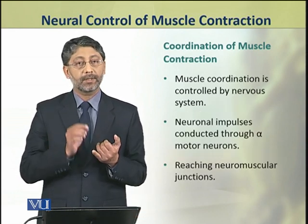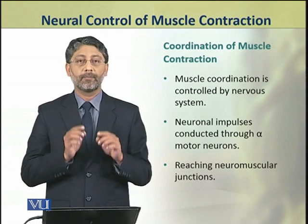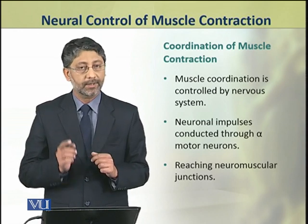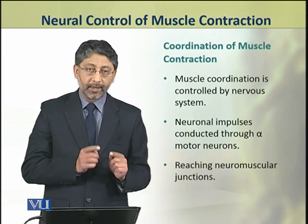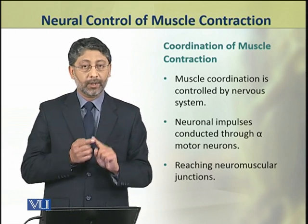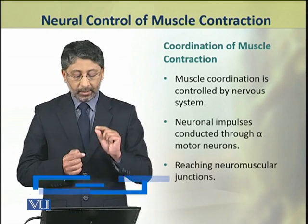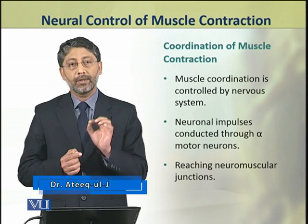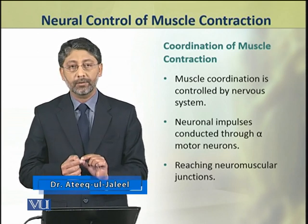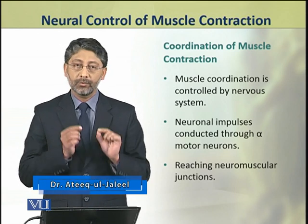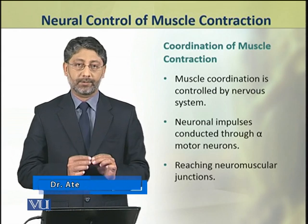Muscle coordination is controlled by the nervous system, which sends neuronal impulses conducted through the alpha motor neurons to the neuromuscular junctions.